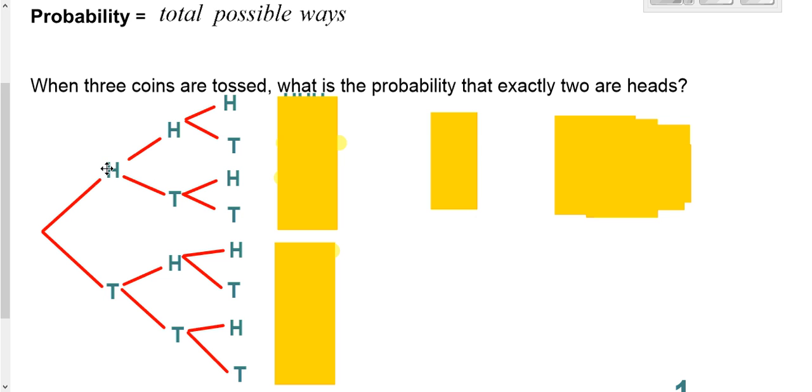So if you follow this top branch, it's a head, head, and head. So I have that written out here. Follow the top branch but then come down one. That's a head, head, and a tail.